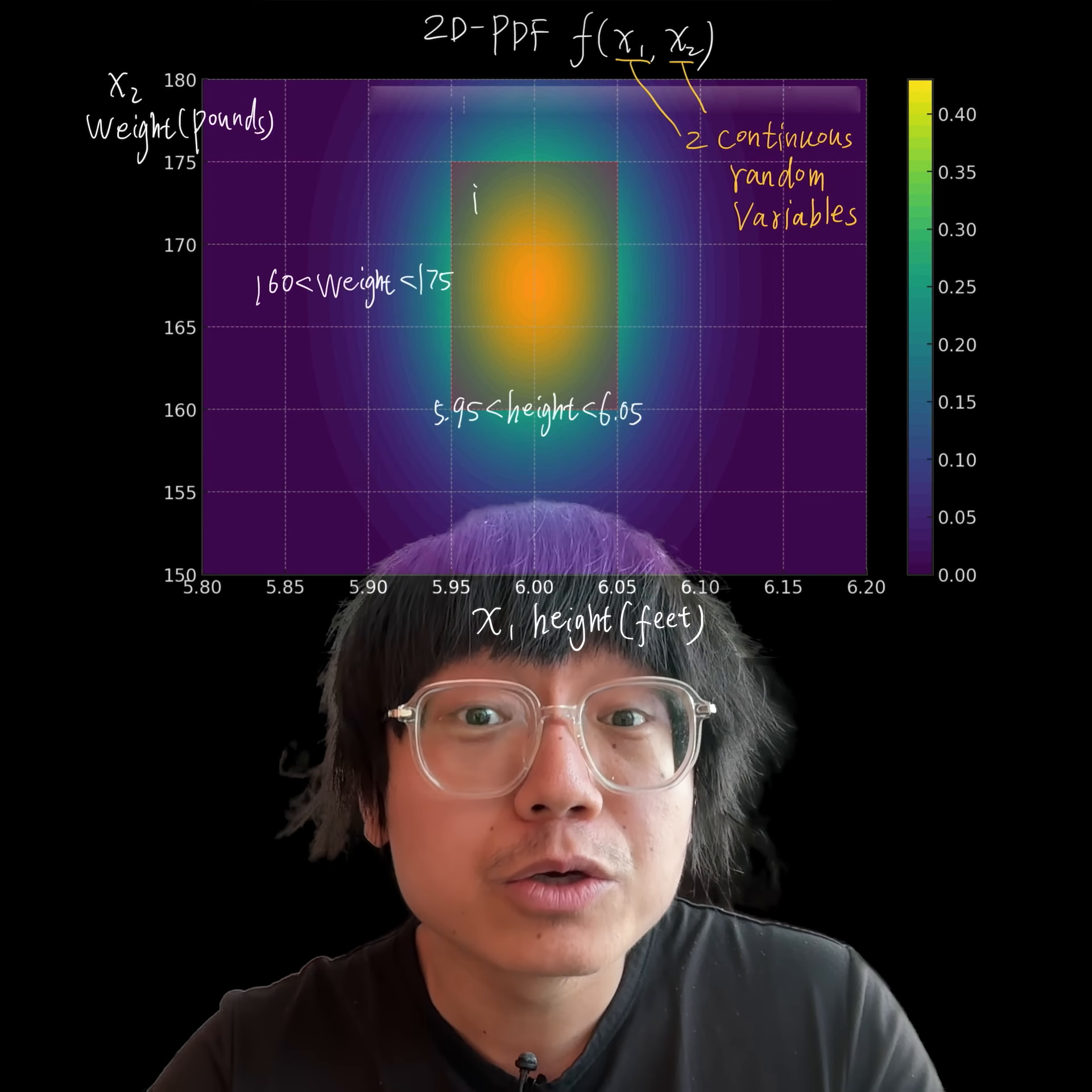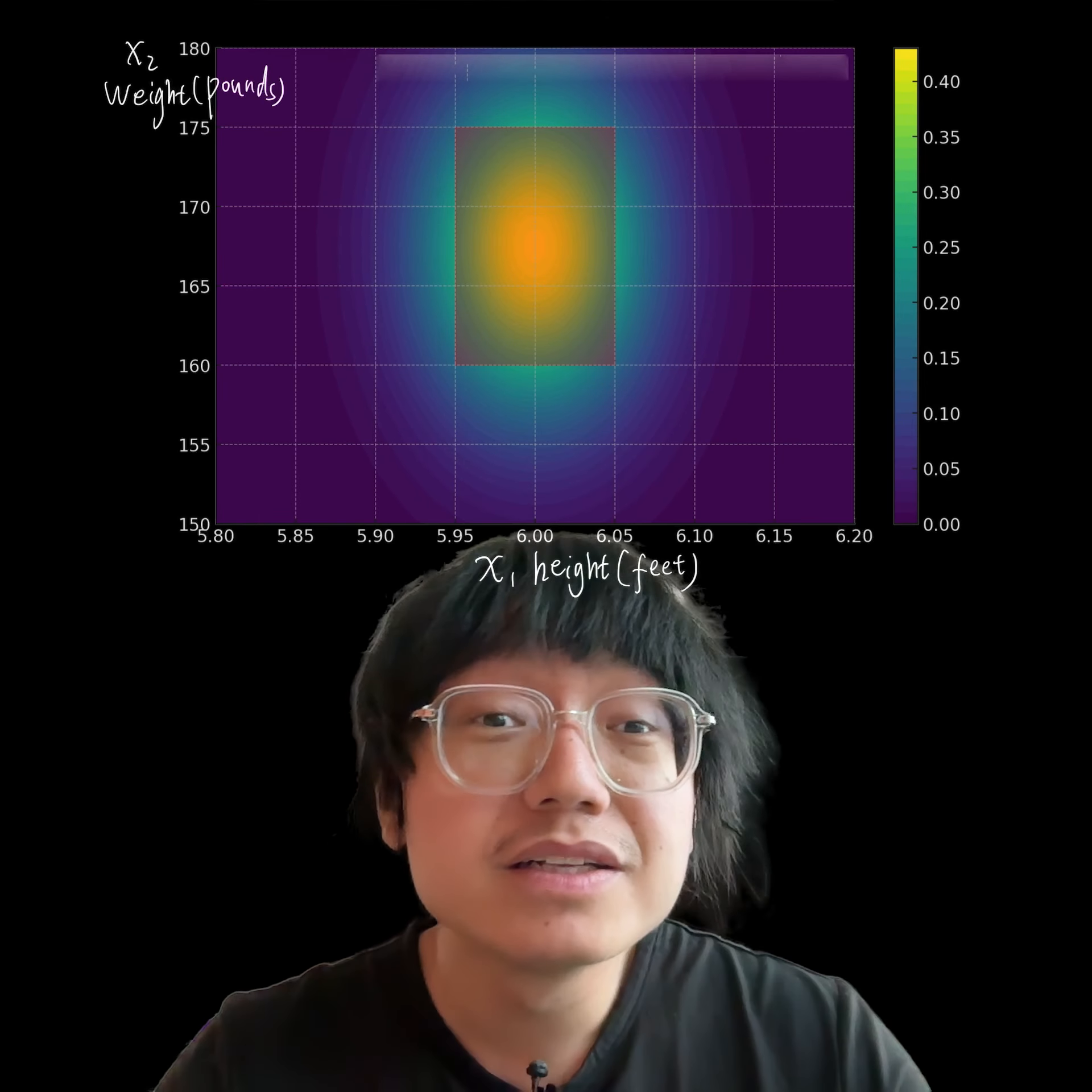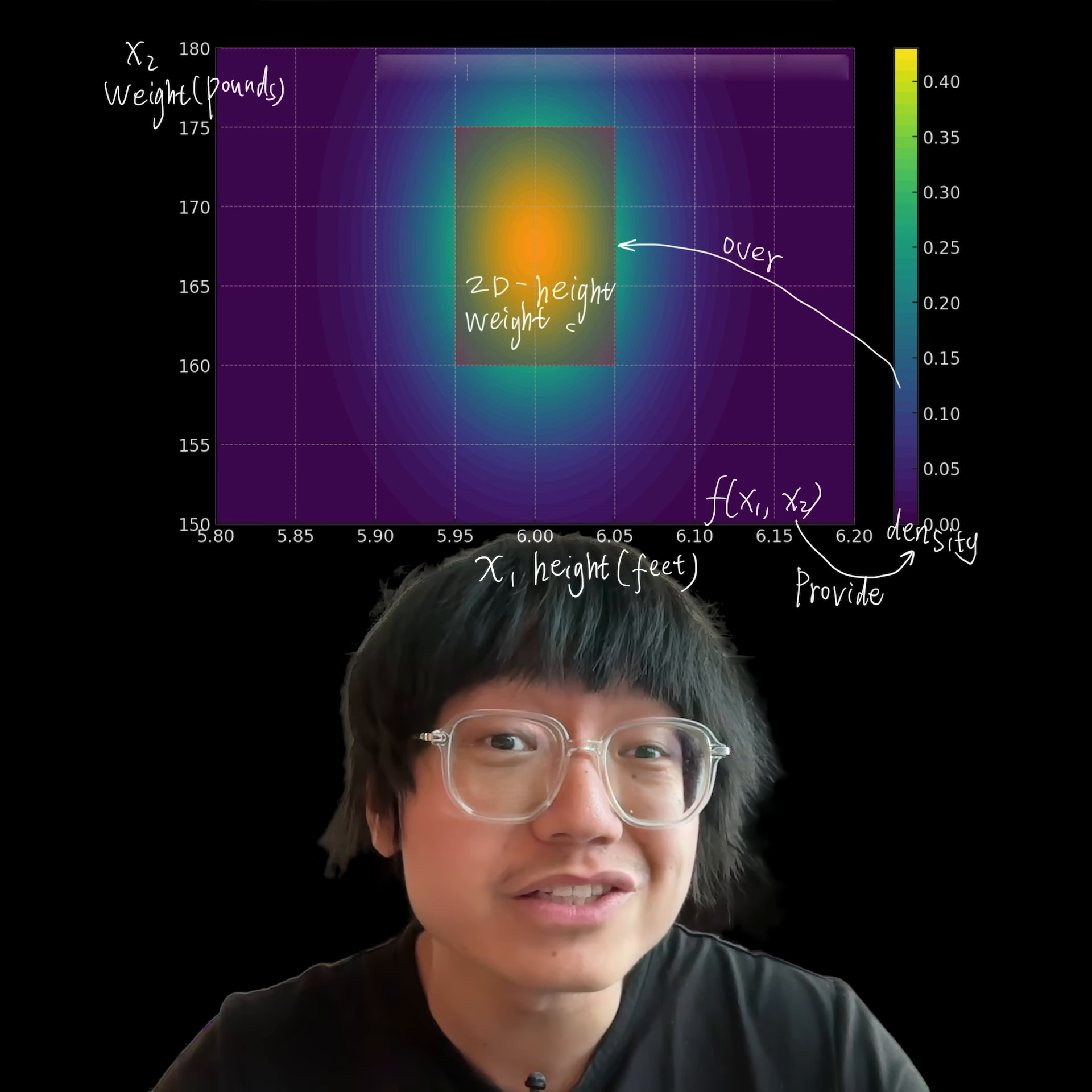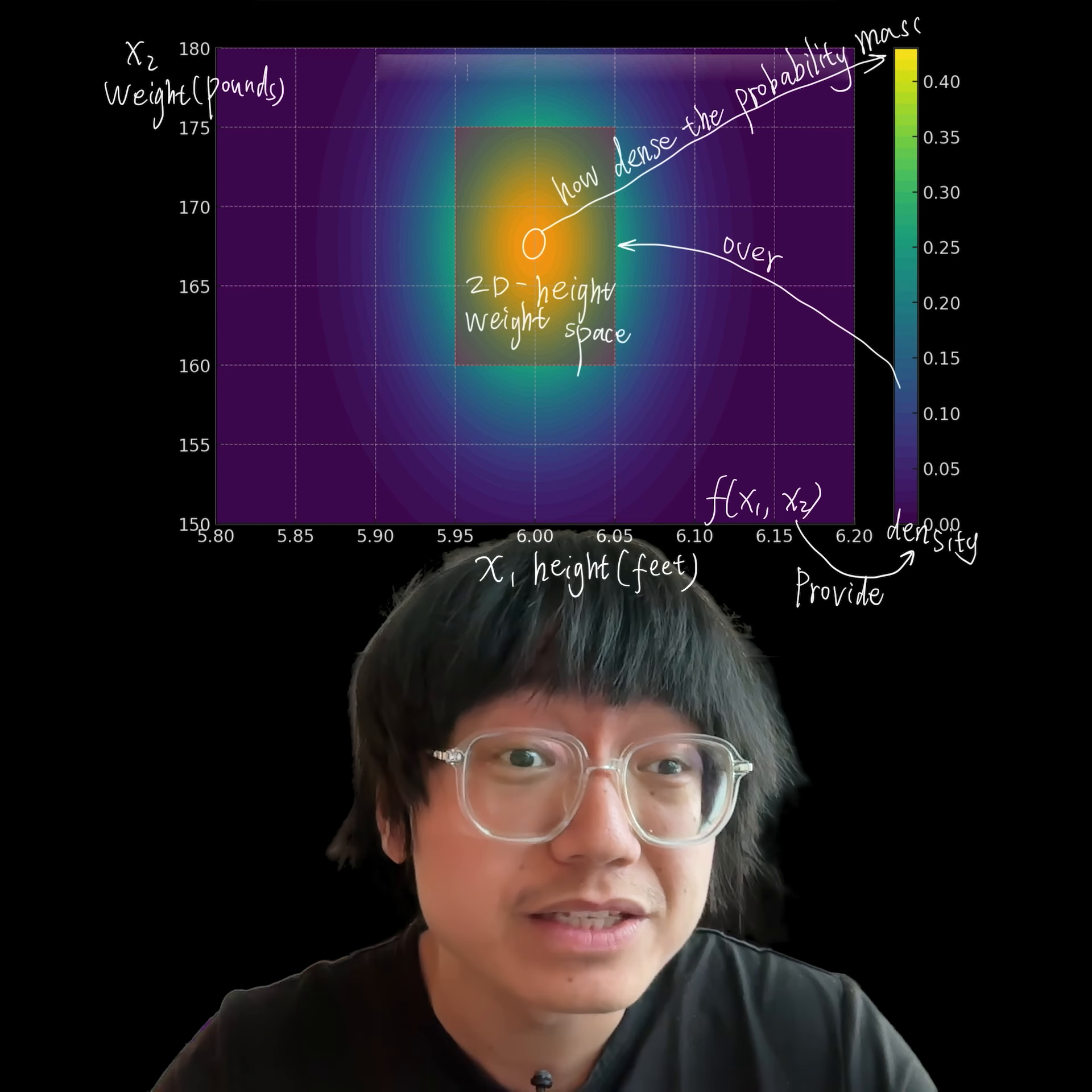We could integrate the joint probability density function over these specified intervals. The function f of x1 and x2 provides a density over a two-dimensional space. So here is height and weight. It tells us how dense the probability mass is at each point in this height and weight space.